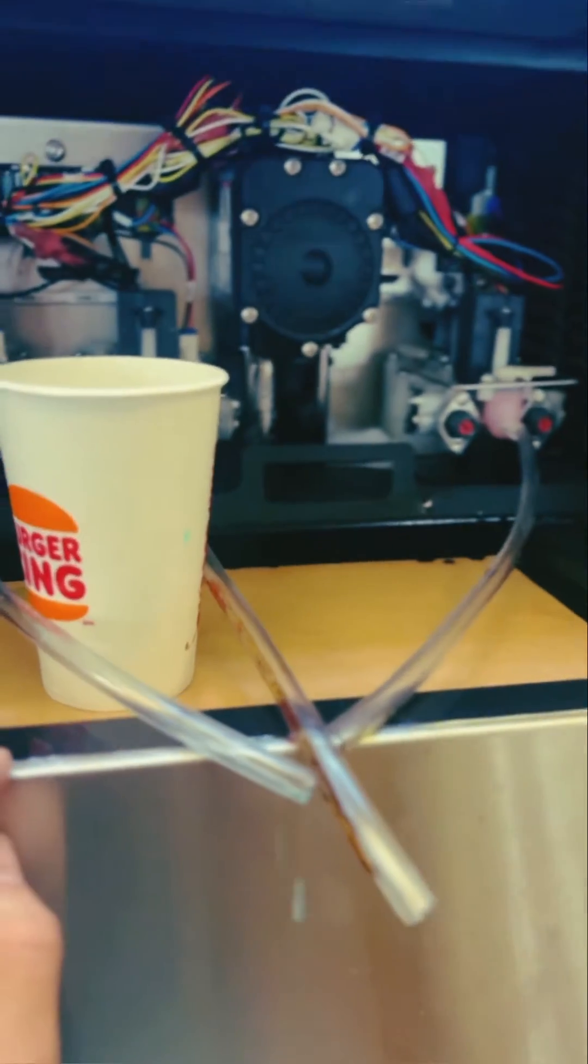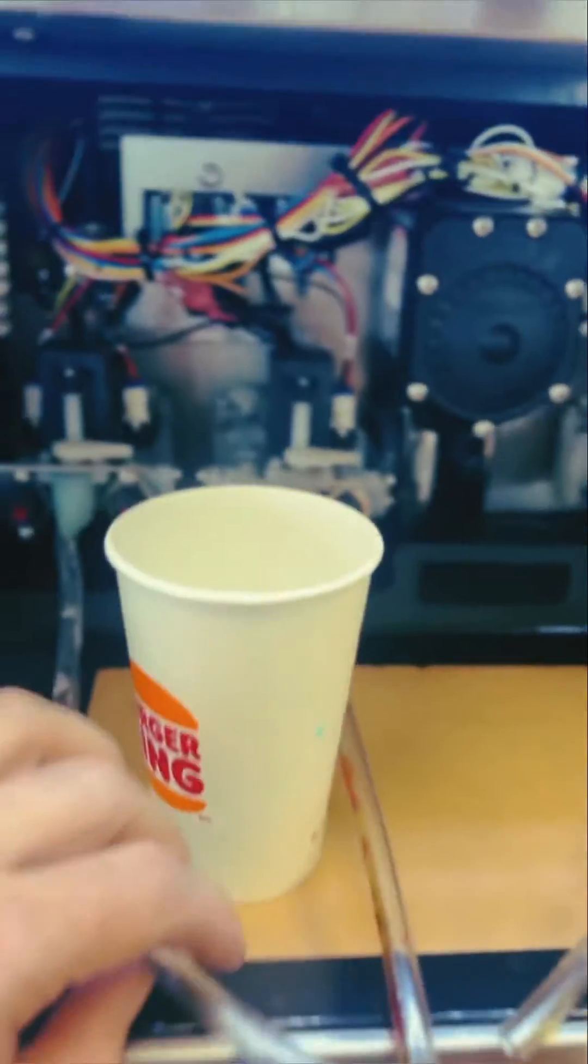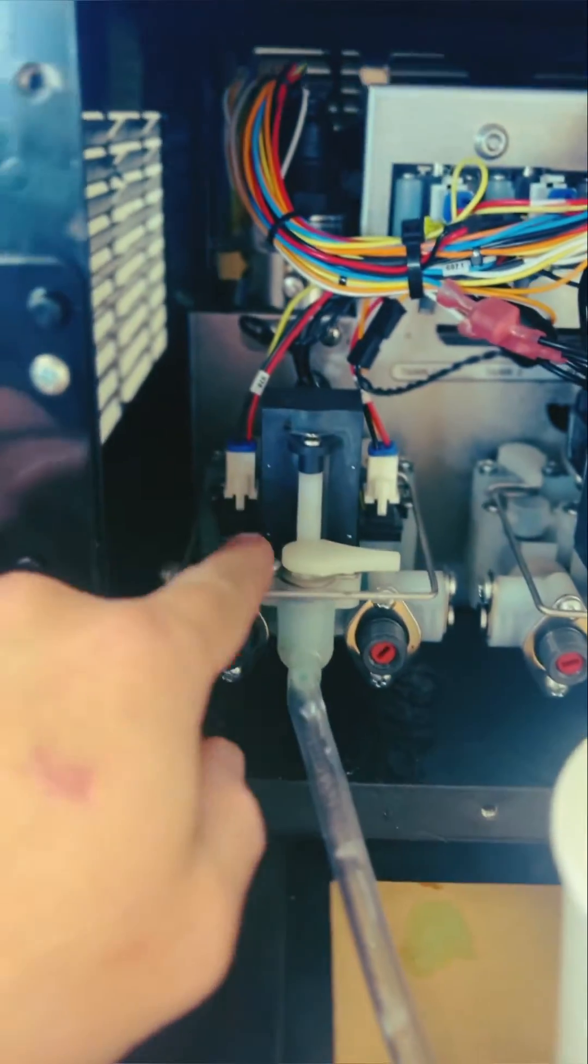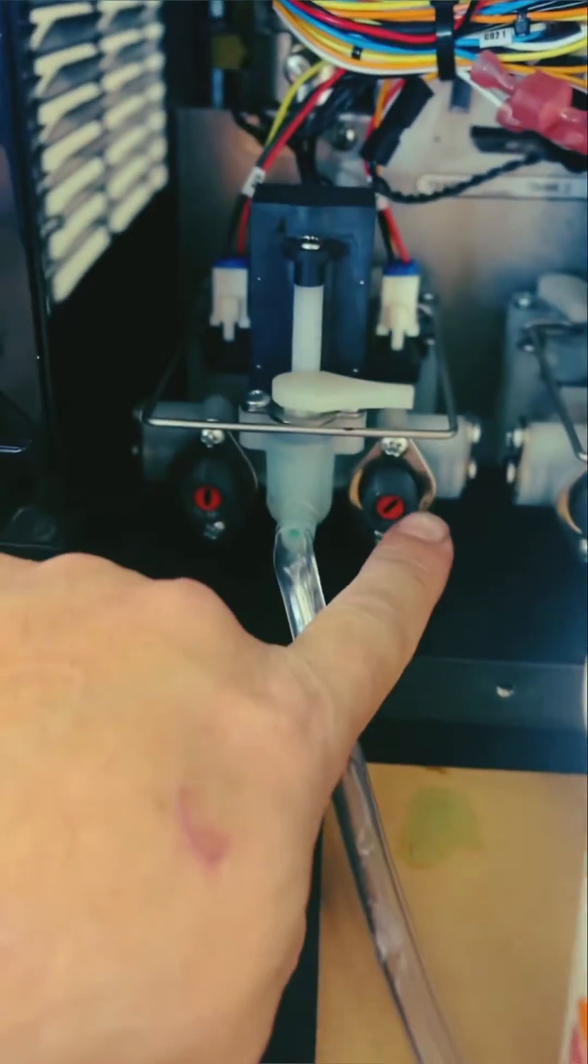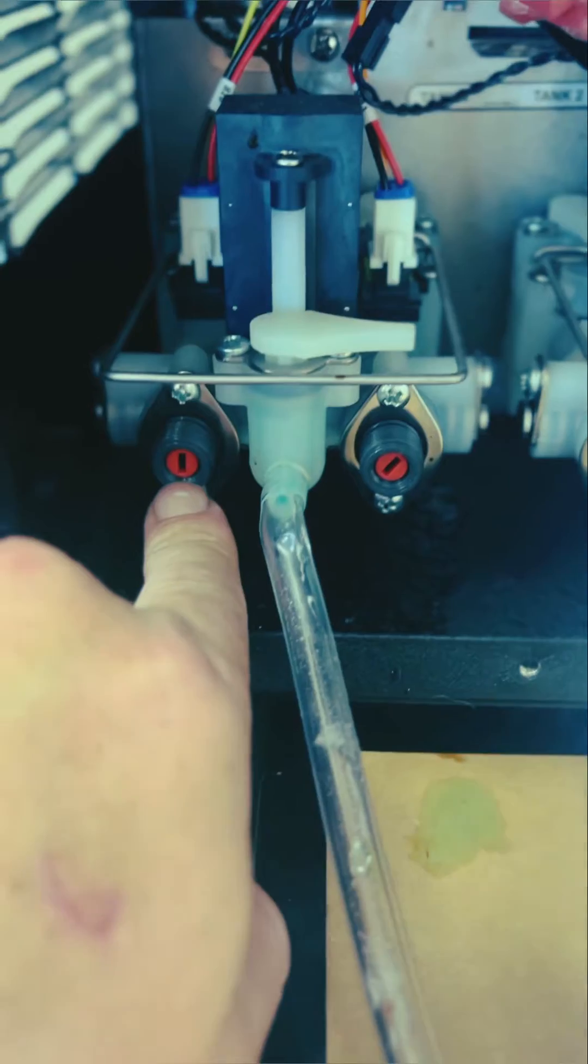Once you access the bottom here, these are your mixing valves, one, two, and three. These are your syrup adjustments, the carbonated water.